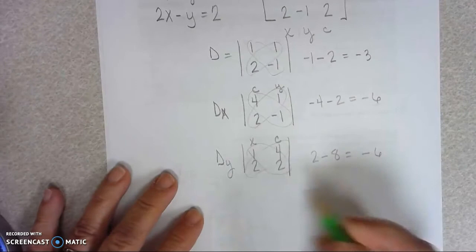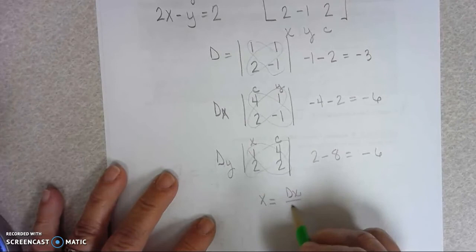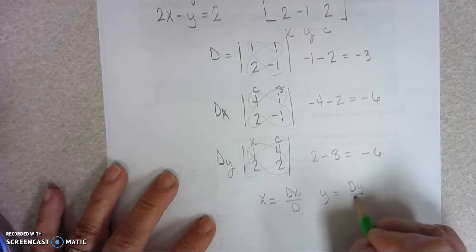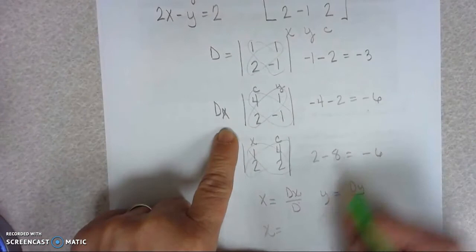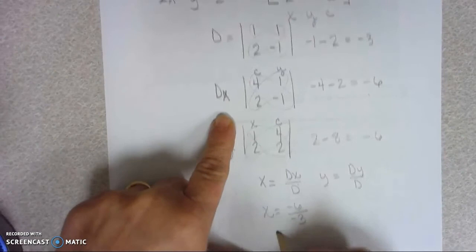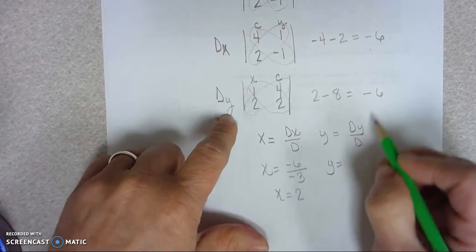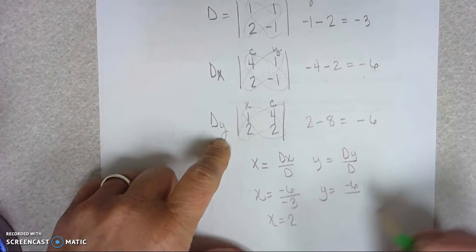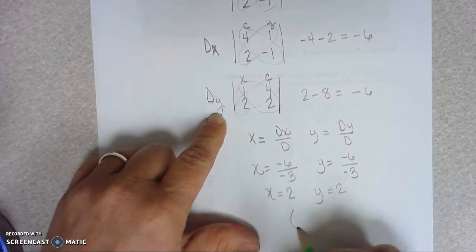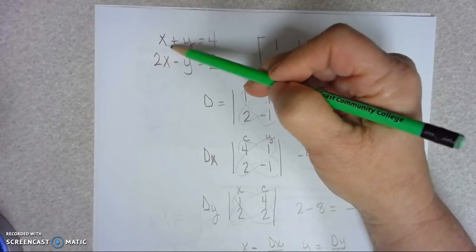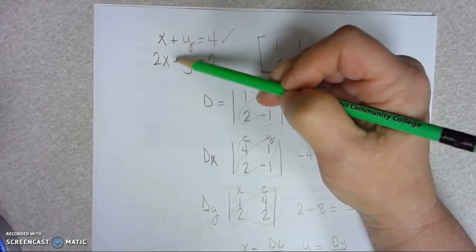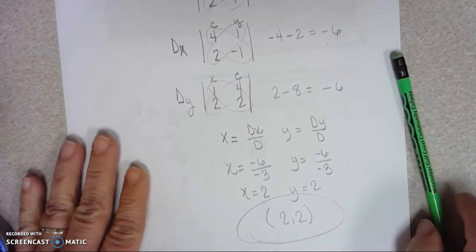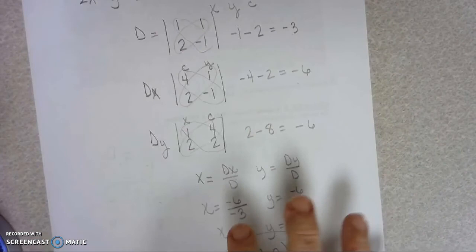To find X, it's the ratio DX over D. To find Y, the ratio is DY over D. So let's see what X is. DX is negative 6 over D is negative 3. I like that answer very well. X equal 2. Y would be negative 6 over D is negative 3. That is also 2. So our solution, it looks like, is 2, 2. Let's see, 2 plus 2 is 4, that checks. 2 times 2 is 4, and 4 minus 2 is also 2. I like that one a lot better. 2, 2.